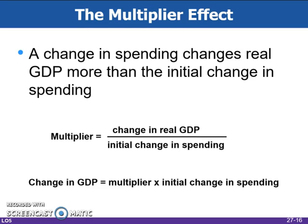Changes in spending ripple through the economy to generate an even larger change in real GDP. This is called the multiplier effect. The multiplier equals the change in real GDP divided by the initial change in spending. Alternatively, it can be rearranged to read: a change in real GDP equals the initial change in spending times the multiplier.